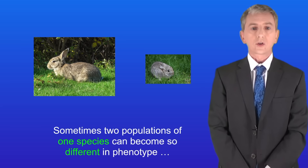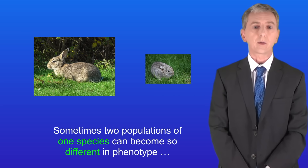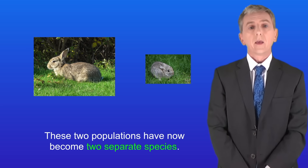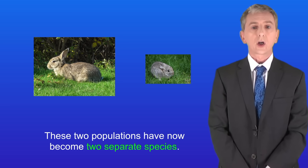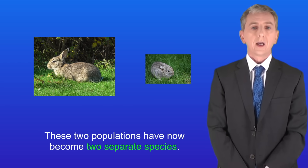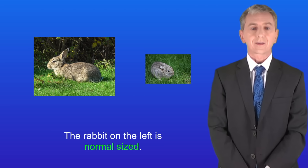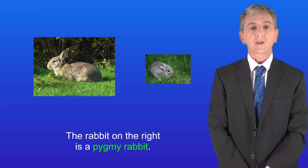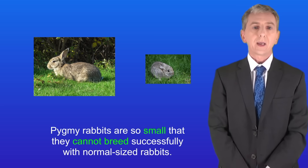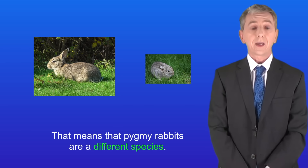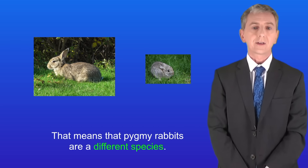Sometimes two populations of one species can become so different in phenotype that they can no longer interbreed to produce fertile offspring. These two populations have now become two separate species. For example, the rabbit on the left is normal sized, while the rabbit on the right is a pygmy rabbit. Pygmy rabbits are so small that they cannot breed successfully with normal sized rabbits, so pygmy rabbits are a different species.